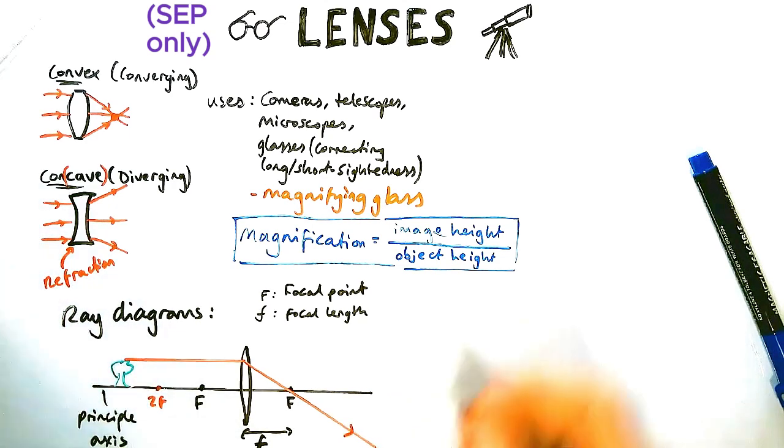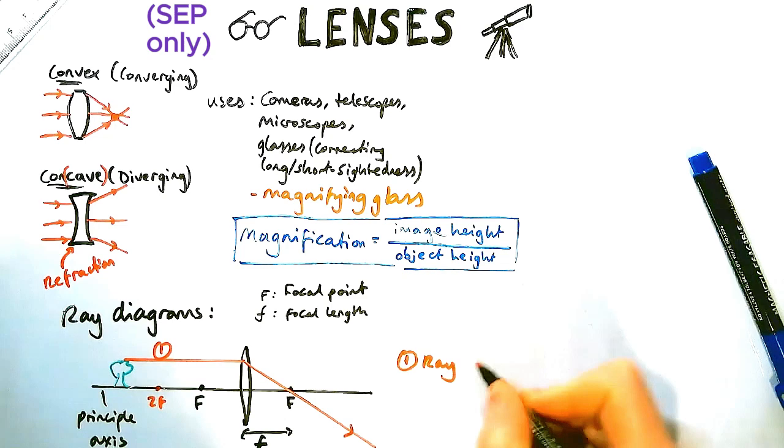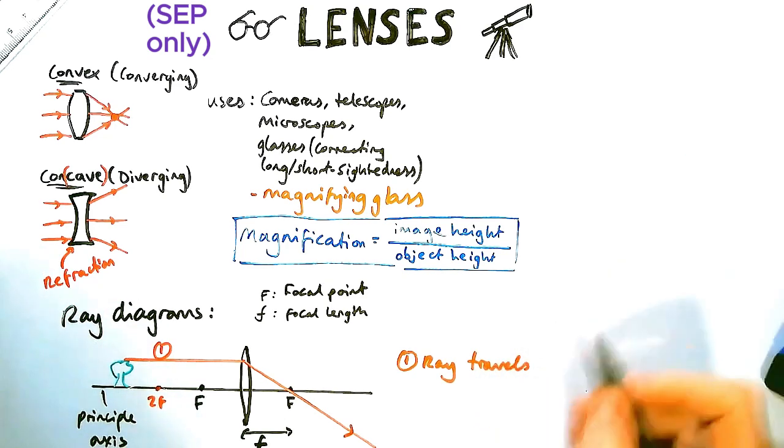Now the first ray I'm going to draw and I'll draw out the rules in a second. This is ray 1, ray number 1. Ray number 1 initially travels parallel to the axis.